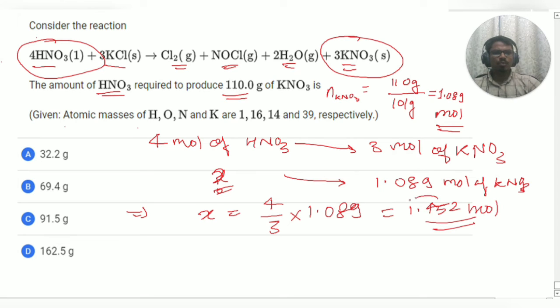So, this much mole of HNO3 required to produce this much mole of KNO3 and now what we are going to do? We are going to convert this mole into mass. So, how we are going to do it?